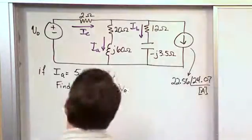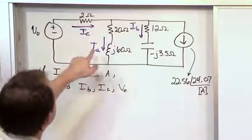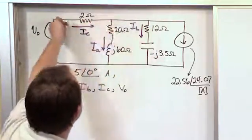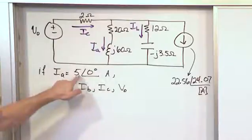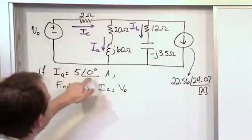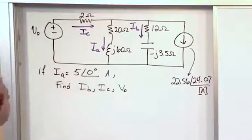And the question is, if Ia, which is this guy, I've labeled Ia, Ib, and Ic, if Ia is known to be 5 amps at an angle of 0 degrees, that's the phasor current,